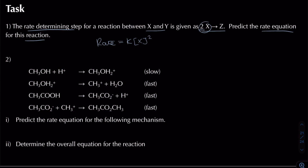Looking at the next question: predict the rate equation for the following mechanism. If we look at the slowest step — the rate determining step — we can identify the reactants as methanol (CH₃OH) and protons (H⁺). So the rate equation is: rate = k[CH₃OH][H⁺], and they're both order 1.